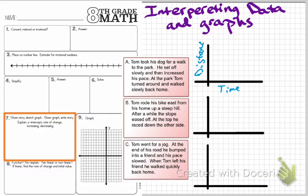He started off slowly, so my graph is going to start kind of slow, and then he increased his pace, so you can see the graph increases. Then he turned around and walked slowly back home, so the distance is getting closer to where he started at a constant rate.